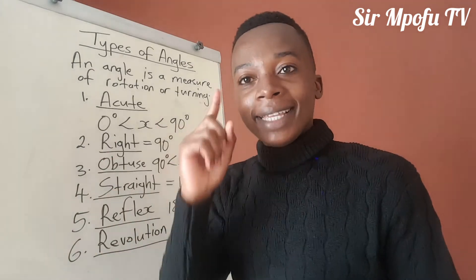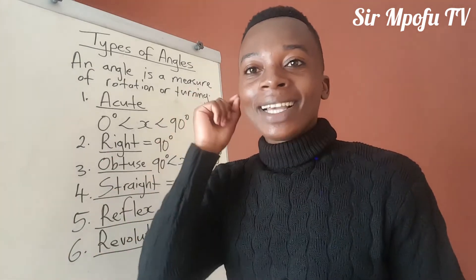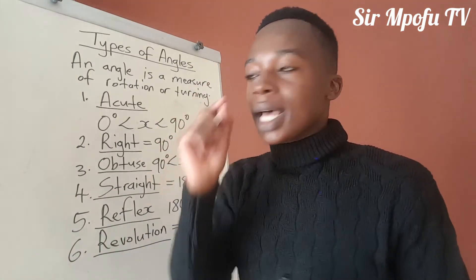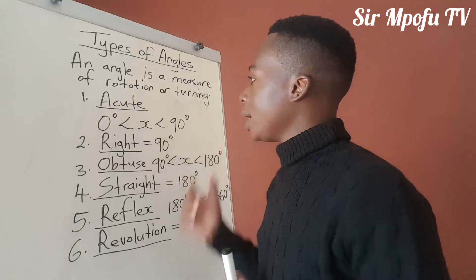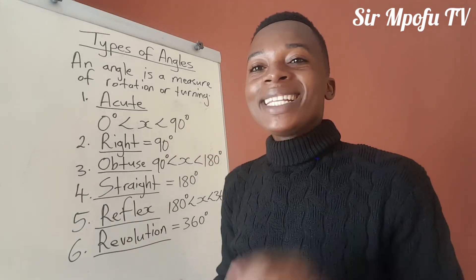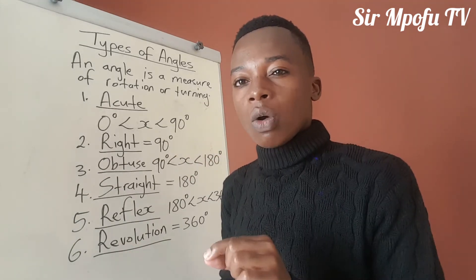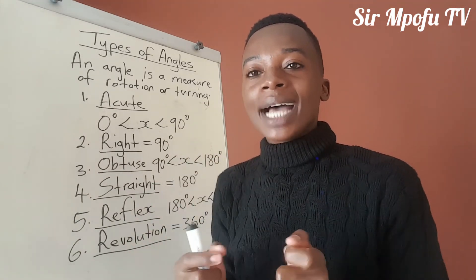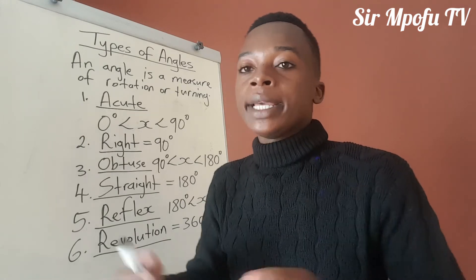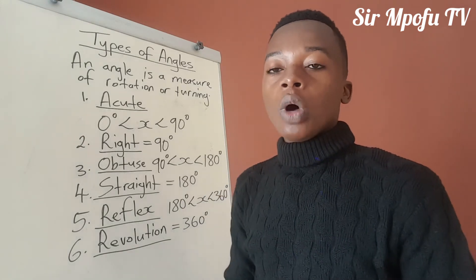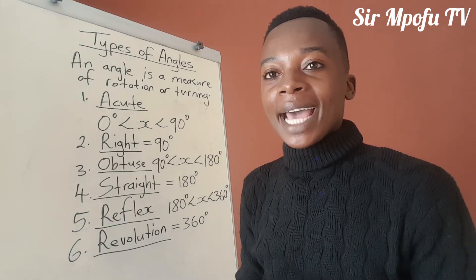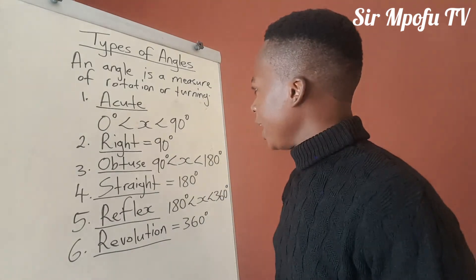Complementary angles are angles that add up to 90 degrees. Then supplementary angles are angles that add up to 180 degrees. Those are what we call supplementary angles.